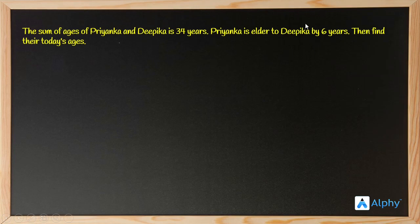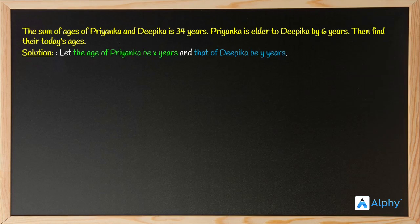Let the age of Priyanka be x years and that of Deepika be y years. From the first condition, the sum of ages of Priyanka and Deepika is 34.